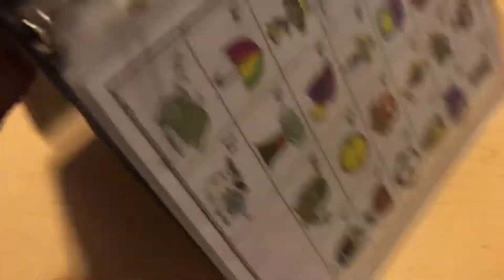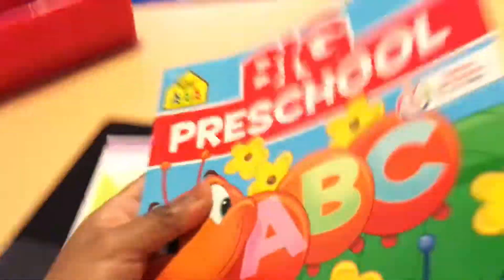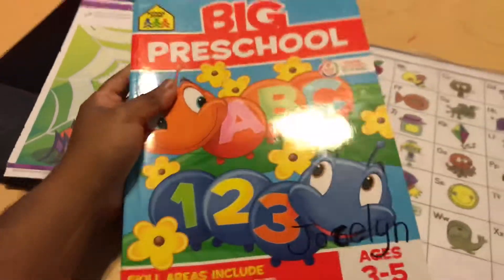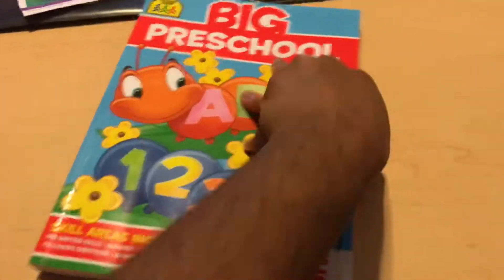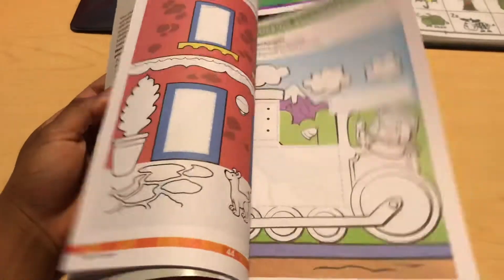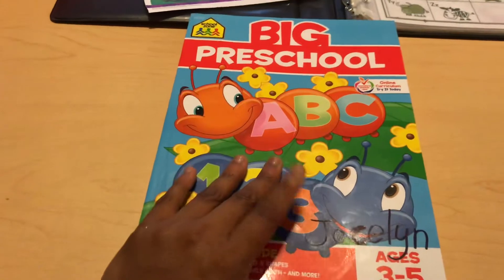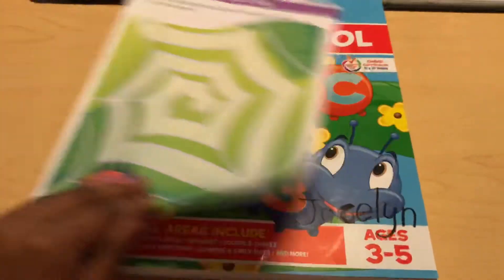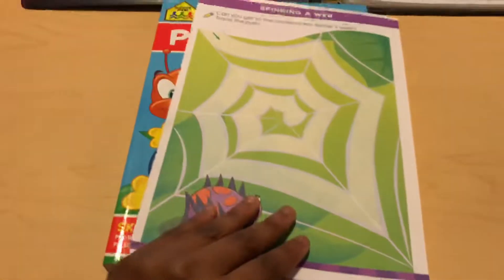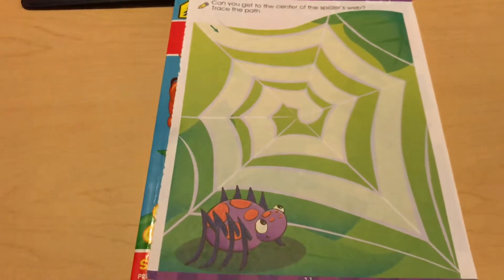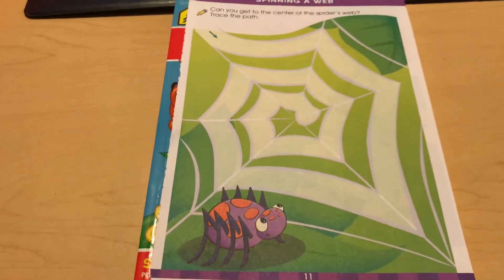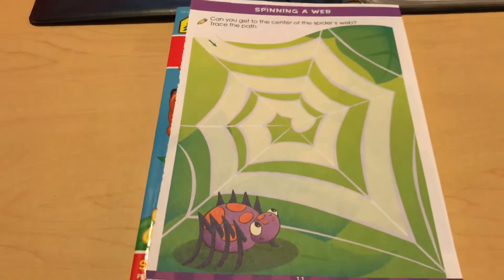For her worksheet, we're using one page from the Big School Zone Big Preschool Workbook. This is a great workbook for kids as a supplement. I don't recommend using this as your main curriculum. I only use one page out of this book. So she does the front and back. Right now she's working through pre-writing skills, and the reason why I use this is because I want her to feel like she's confident and able to do work by herself.